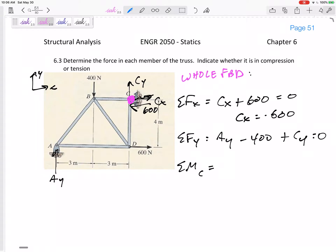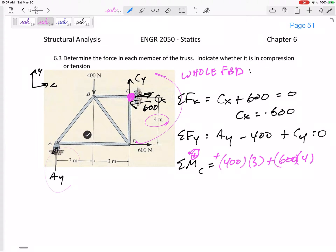C is my pivot point. Cx goes straight through it, Cy goes straight through it, but this 400 has a moment arm. Here's its moment arm, perpendicular to the line of action of the force, and that distance would be 3, and this would create a counterclockwise, which I say is positive. So positive 400 times 3. The 600 has a moment arm of 4, creating also a positive moment. And then we've got Ay. Its moment arm is 6, perpendicular to the line of action of the force. This would be a negative moment because Ay would try to push that clockwise. Set that equal to 0.